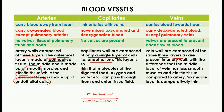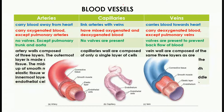In the case of veins, they are also composed of three layers, but the composition is different. The middle layer has less smooth and elastic muscle compared to arteries, where a high amount of smooth and elastic tissue is present. In veins, less smooth and elastic tissue is present, so the middle layer is comparatively thin. The internal layer here is endothelial tissue.